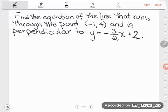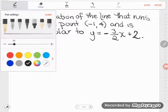A student just messaged me and said that she took her GED test and got a problem like this on it. Let's take a look. It says find the equation of the line that runs through the point (-1, 4) and is perpendicular to y = -3/2x + 2.